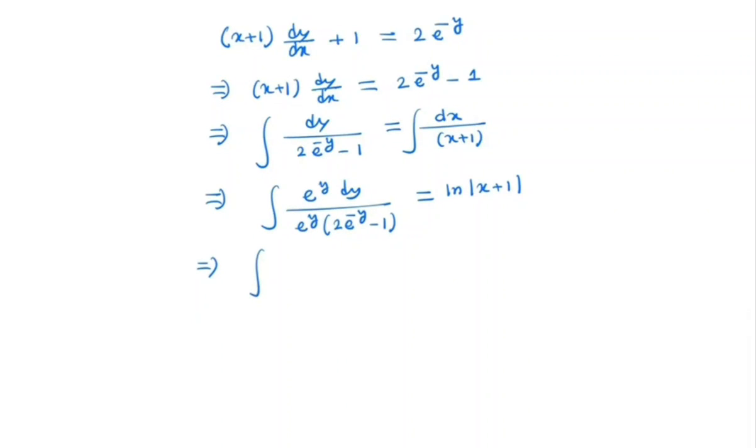On the left hand side, we have e^y dy/(2e^y - e^(2y)). Now we substitute 2 - e^y as u. So we have -e^y dy = du, which means e^y dy = -du.